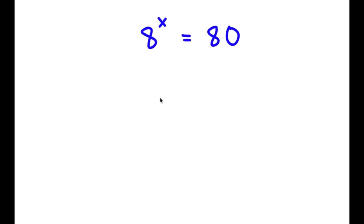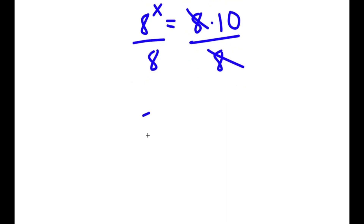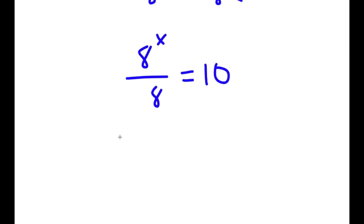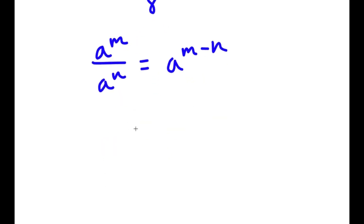In this problem, I have 8 to the power of x is equal to 80. To solve this, I'm going to first rewrite 80 as 8 times 10. So now I have 8 to the power of x is equal to 8 times 10. Dividing both sides by 8, and using the rule that a to the power of m over a to the power of n equals a to the power of m minus n, I get 8 to the power of x minus 1 is equal to 10.